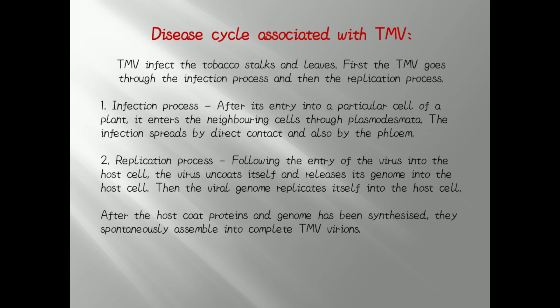Now we will discuss the disease cycle associated with Tobacco Mosaic Virus. Tobacco Mosaic Virus infects tobacco stalks or leaves. The TMV goes through an infection process and a replication process. During the infection process, after entry into a particular plant cell, it enters neighboring cells through the plasmodesmata. The infection spreads by direct contact and also by the phloem.